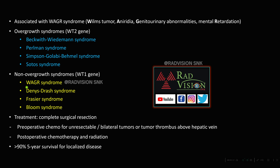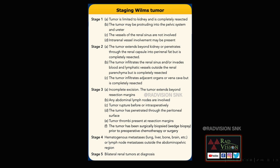Syndromes associated: overgrowth syndrome is typically WT2 gene — Beckwith-Wiedemann syndrome. Non-overgrowth syndrome is WAGR syndrome: Wilms, aniridia, genital abnormalities, and mental retardation. Staging — Stage 1: tumor limited to the kidney. Stage 2: tumor extends beyond the kidney. Stage 3: incomplete excision or tumor rupture into the peritoneum. Stage 4: hematogenous metastasis. Stage 5: bilateral tumor.